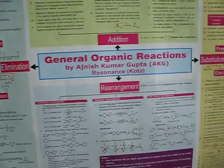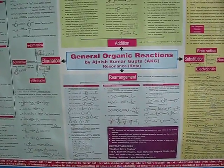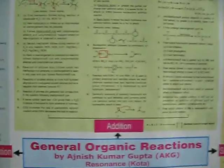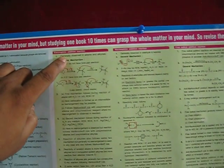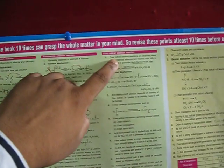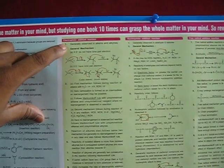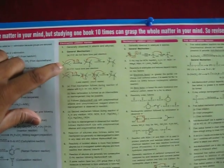On the basis of attacking species, this addition reaction is further divided into electrophilic addition, nucleophilic addition, and free radical addition. In case of electrophilic addition reactions, electrophiles are attacked first, which are generally observed in case of alkenes and alkynes.